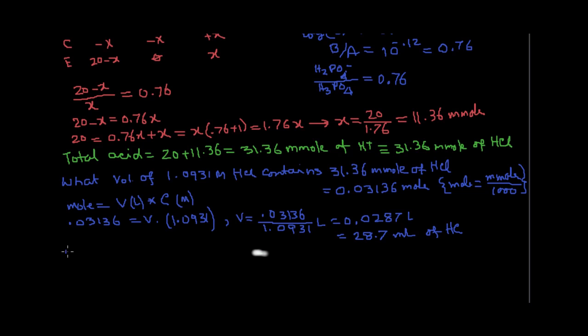We have the answer of this question. You need 28.7 milliliter of 1.0931 molar HCl. That is the answer. All other buffers with this kind of information given should be treated in the same way.